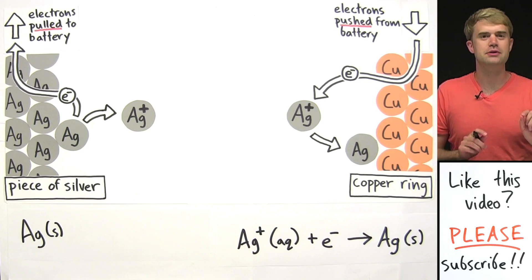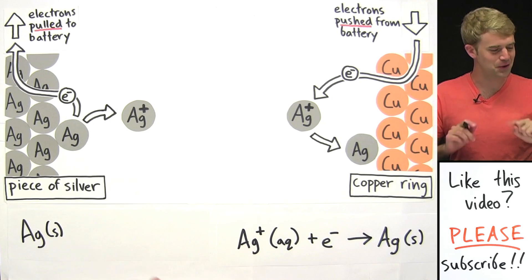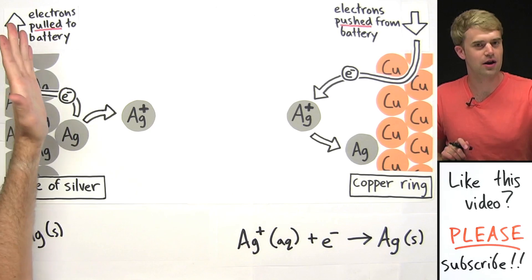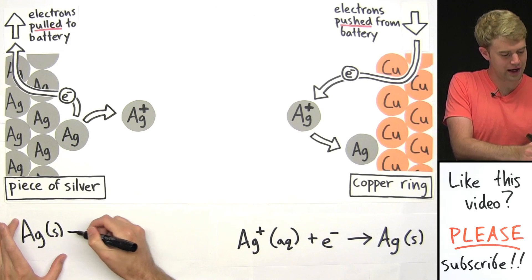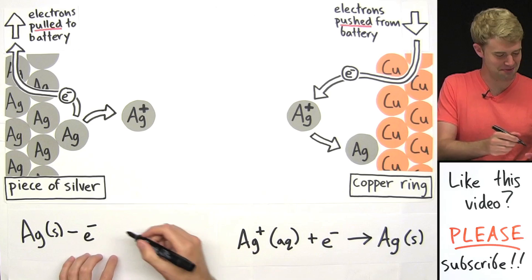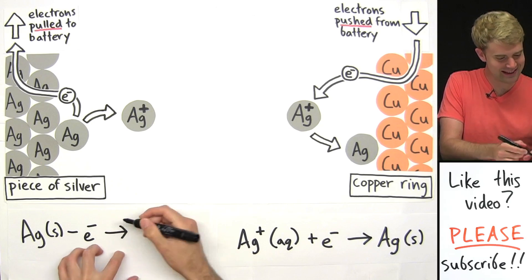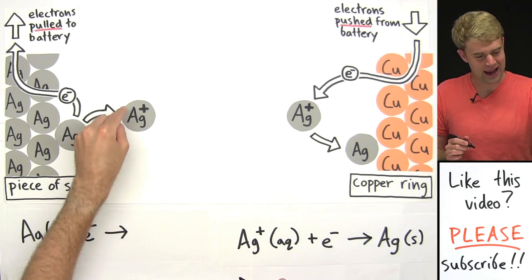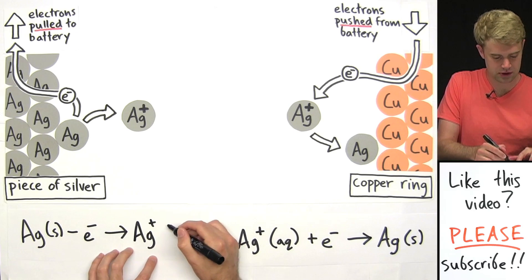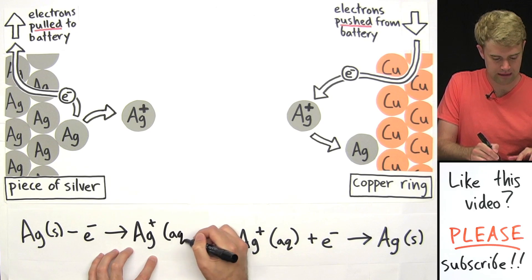Now, what happens, and this is the part that I'm going to do incorrectly, is this Ag loses one of its electrons. So I'm going to write minus E minus. That's not right, we'll fix it in a minute. And losing that electron gives us Ag1+, that is now dissolved in solution, so it's going to be Aq.